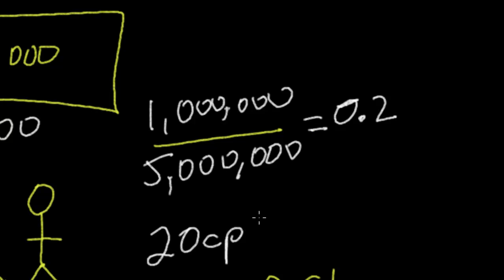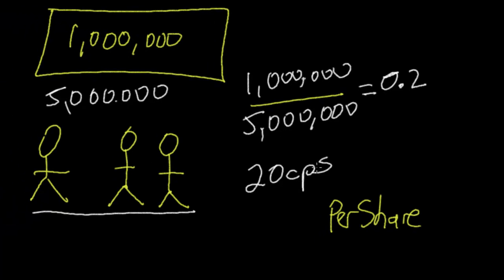That means for every share you've got, you'll get 20 cents, which is pretty good for not actually doing much - just investing in the company. They're giving the money back to you because you own the company, you're a part owner, so you should have some of the shares.